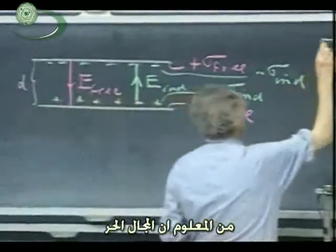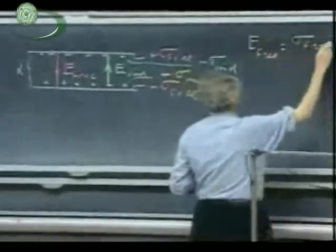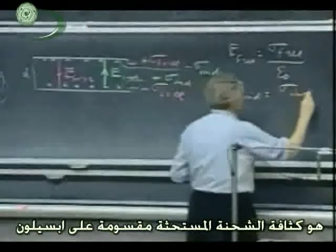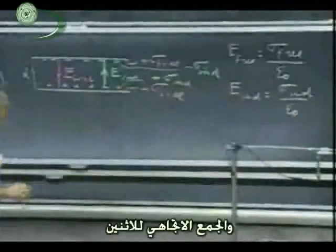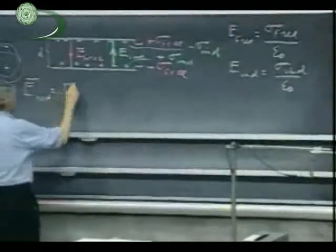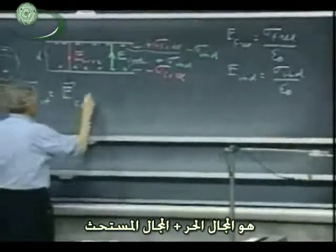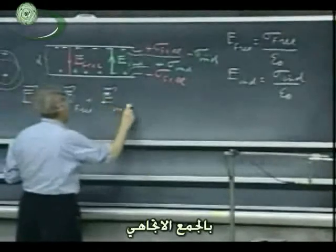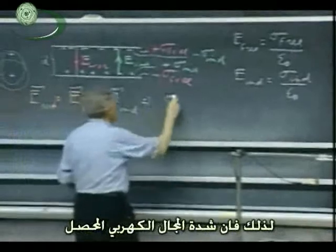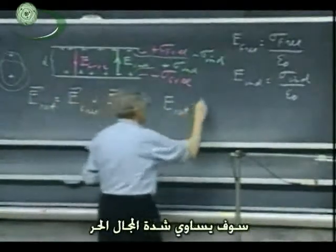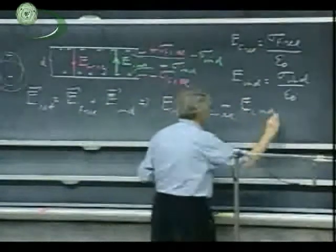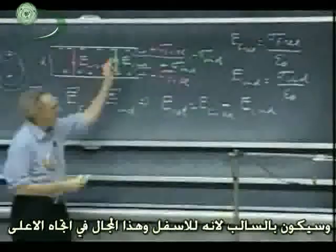E free is the surface charge density divided by epsilon zero, and E induced is the induced surface charge density divided by epsilon zero. The net E field is the vectorial sum of the two: E net equals E free plus E induced, vectorially added. Since I know the direction already and I'm interested in magnitudes, the strength of the net E field is the strength of the E field created by the free charge minus the strength of the E field created by the induced charge — minus because this E vector is down and the induced one is in the up direction.